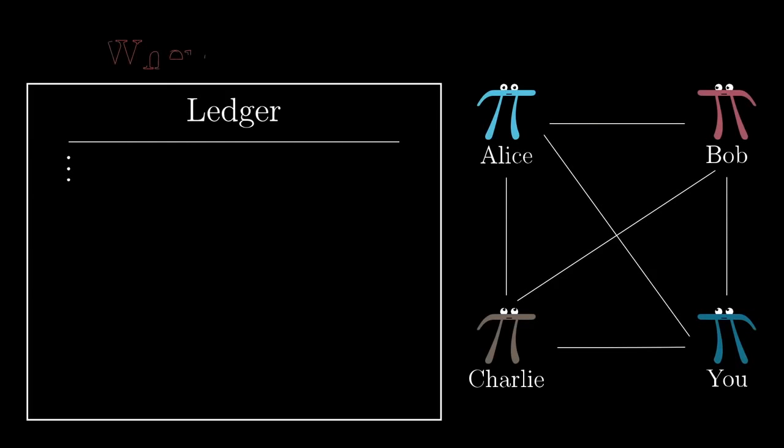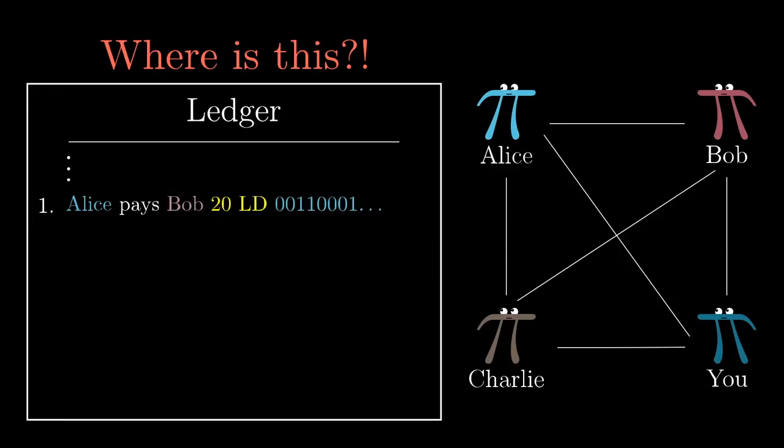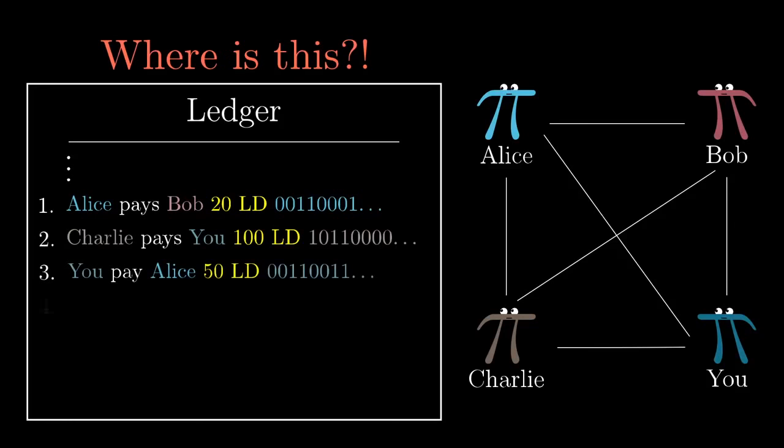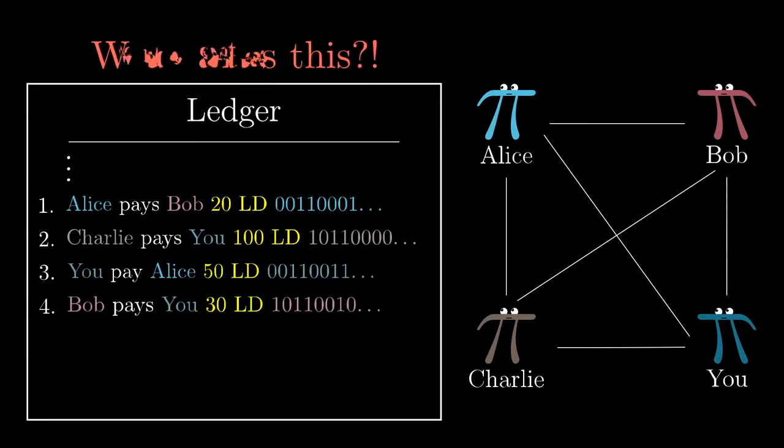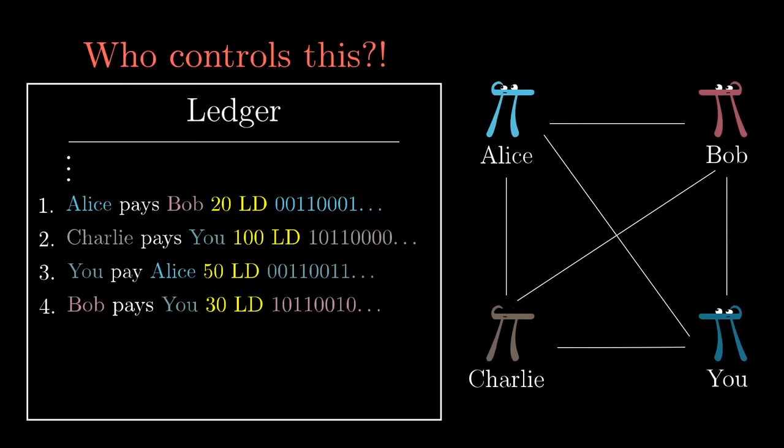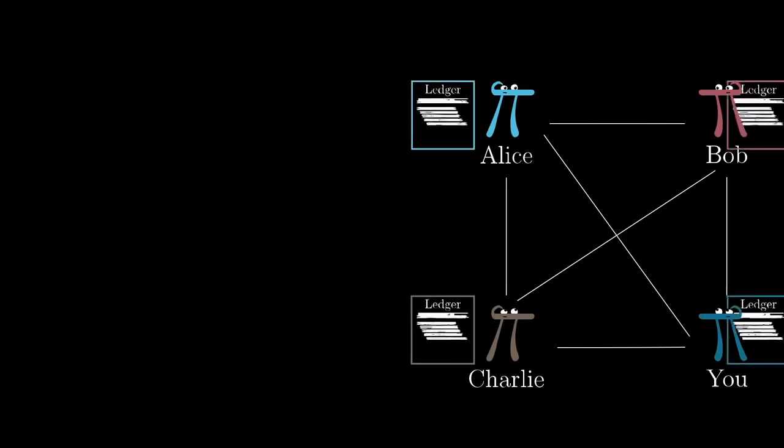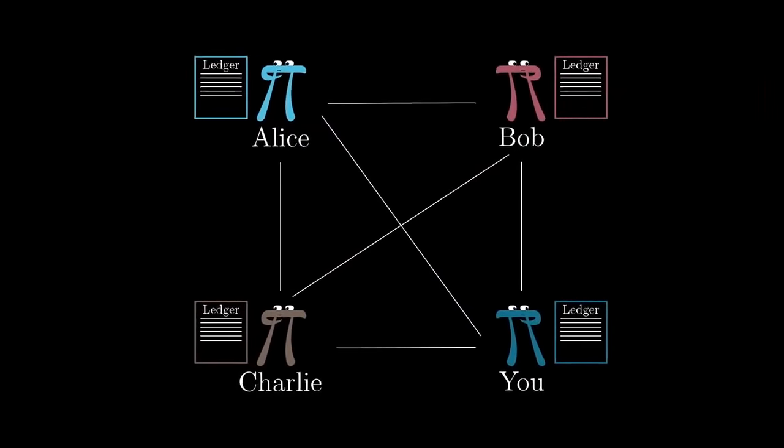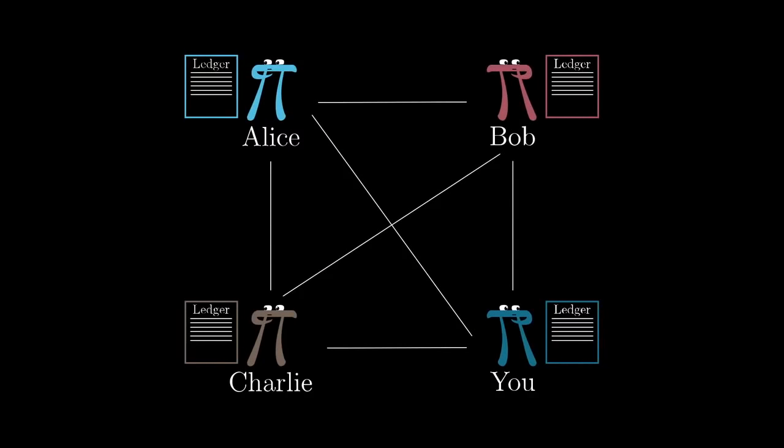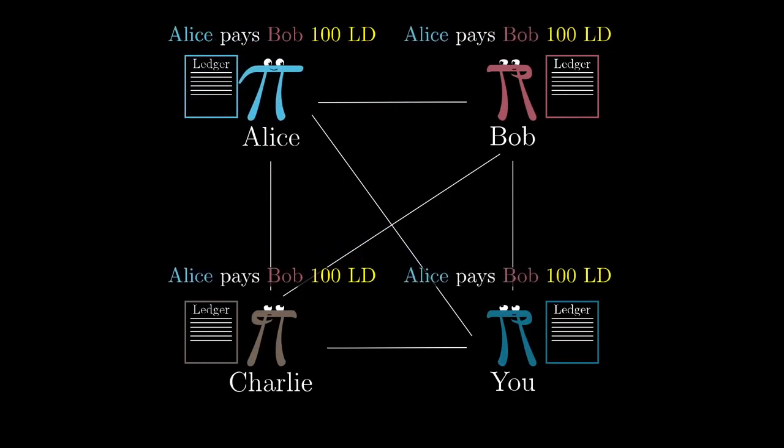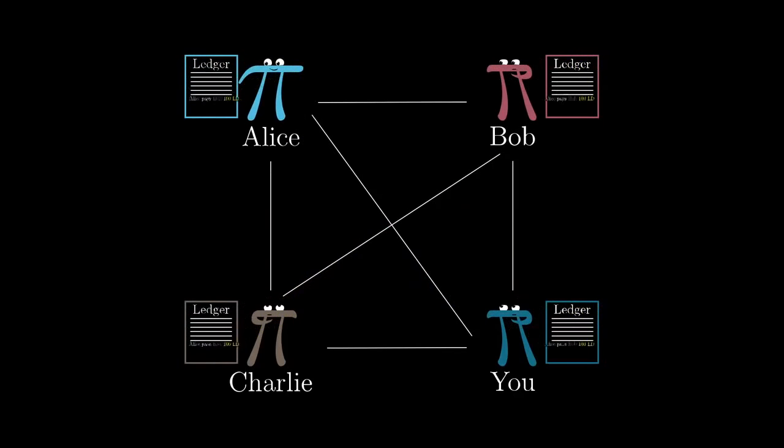So far, I've said that this ledger is in some public place, like a website where anyone can add new lines. But that would require trusting a central location. Namely, who hosts the website? Who controls the rules of adding new lines? To remove that bit of trust, we'll have everybody keep their own copy of the ledger. Then when you want to make a transaction, like Alice Pays Bob 100 ledger dollars, what you do is broadcast that out into the world for people to hear and to record on their own private ledgers.